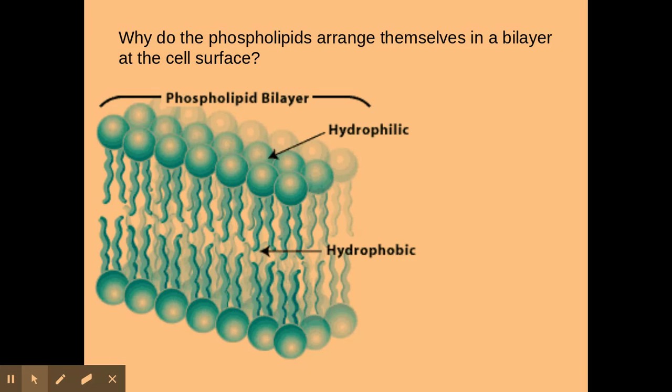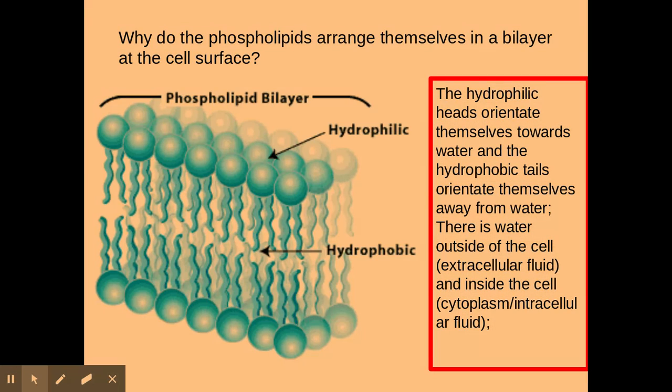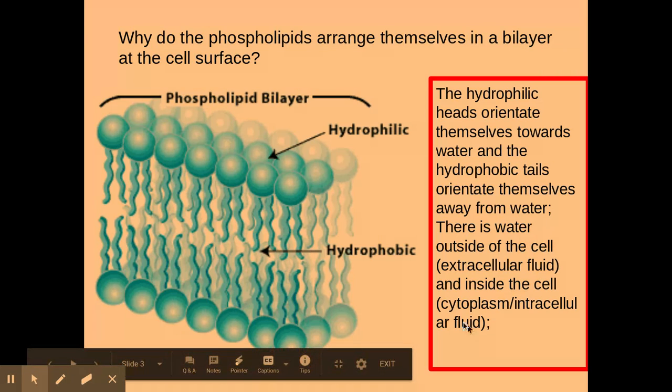A very popular question is why do phospholipids arrange themselves in a bilayer at the cell surface? This is because the hydrophilic heads orientate themselves towards the water and the hydrophobic tails orientate themselves away. It's really good to use those terms 'orientate away' and 'towards'—the examiner doesn't really like the term 'water loving' and 'water hating' that you might see in textbooks. Students quite regularly miss off this last bit: you need to mention that water is outside the membrane and also on the inside of the cell. It's outside the cell and inside the cell—don't miss off that last point to pick up all the marks.